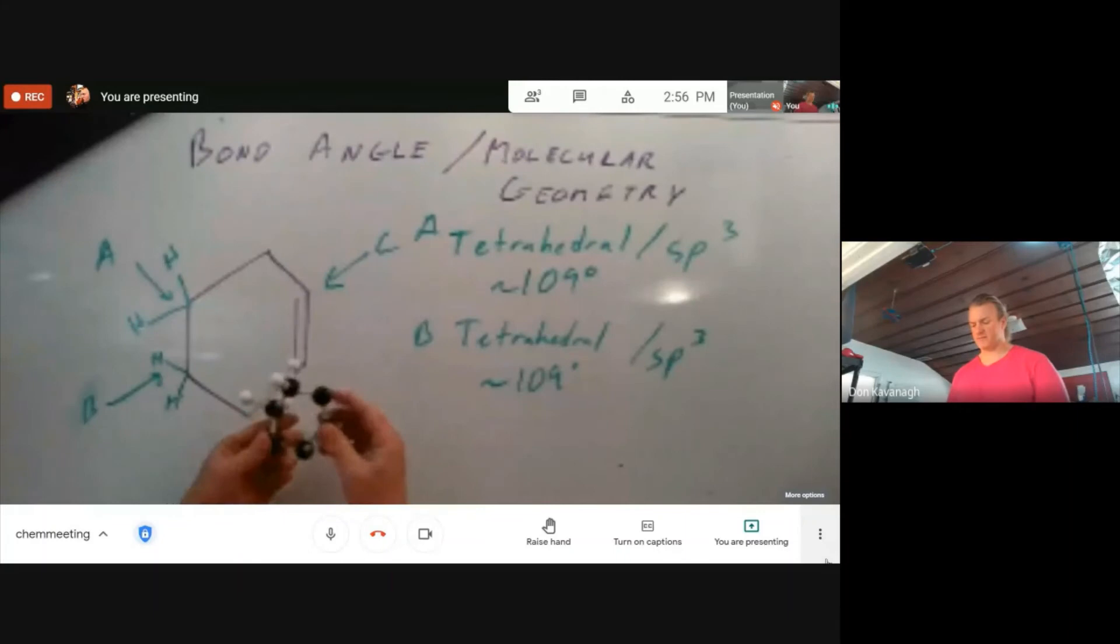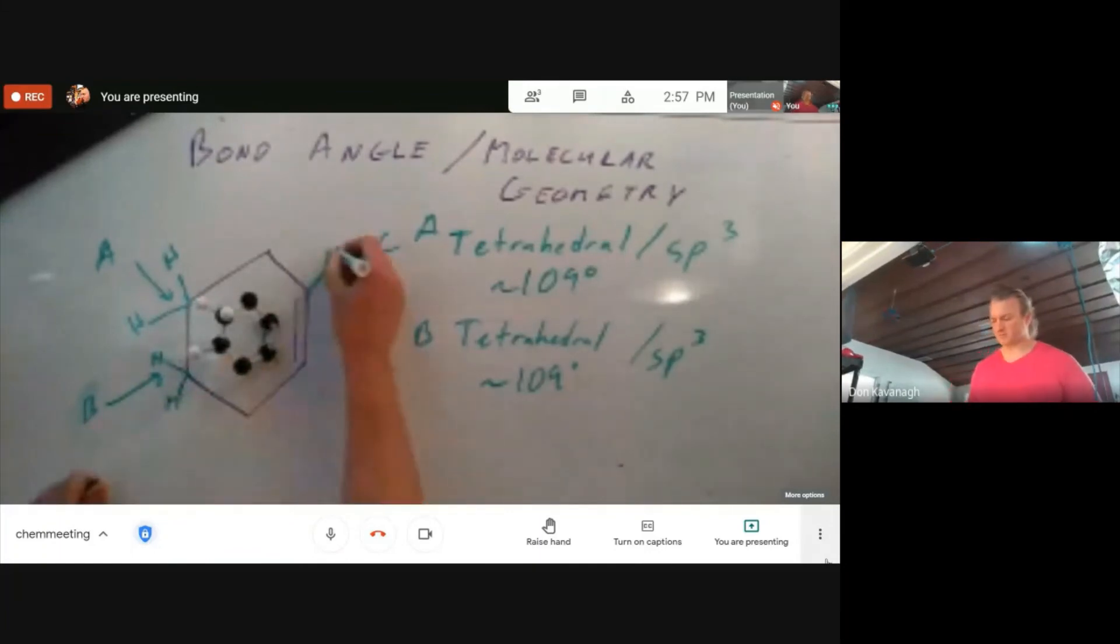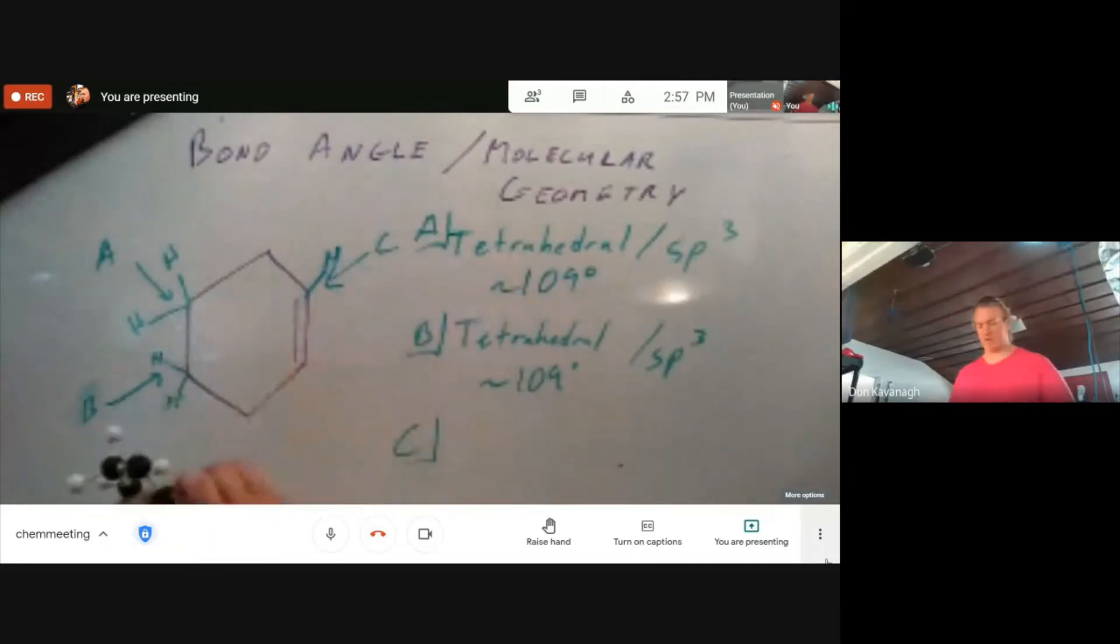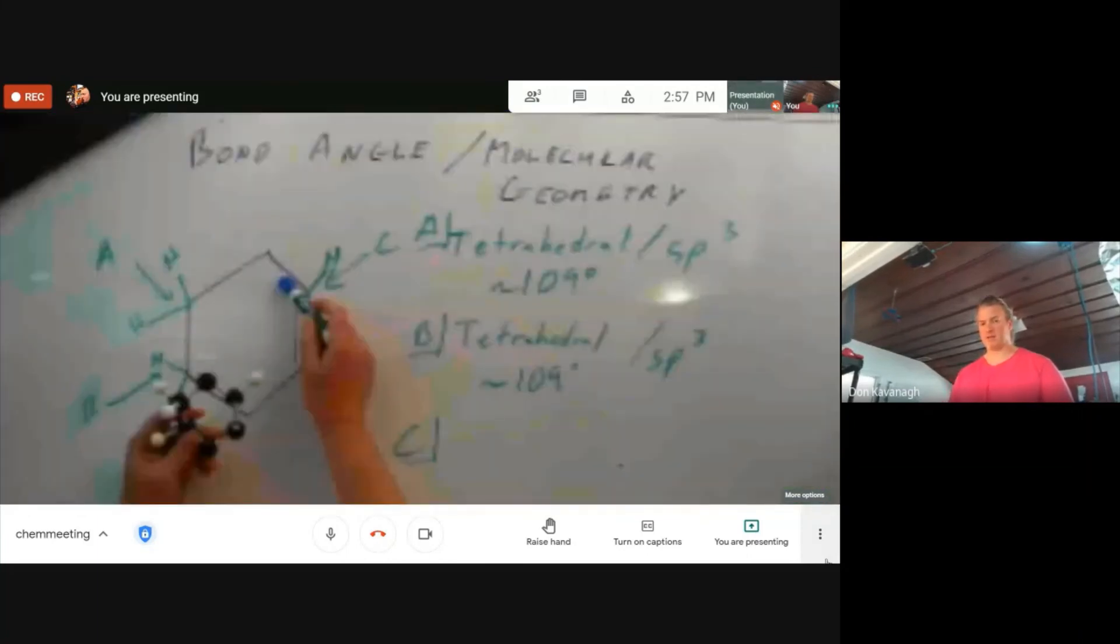It has a different hybridization and a different bond angle and a different geometry. This carbon is bonded four times but only bonded to three different things. There are one, two, three sigma bonds and one pi bond. Let's do the counting of the hybridization.